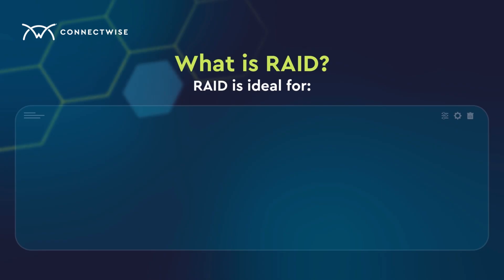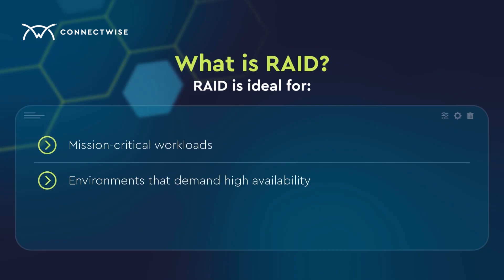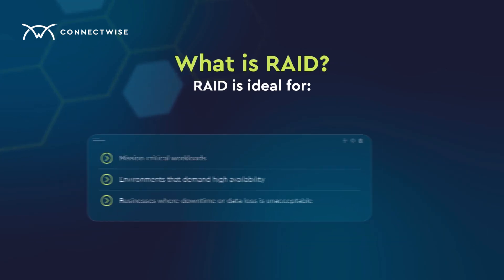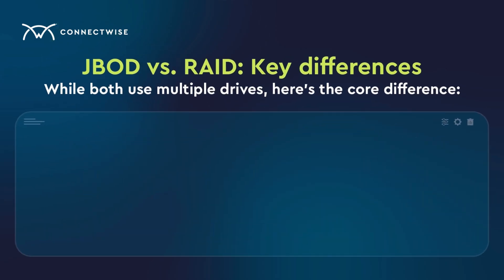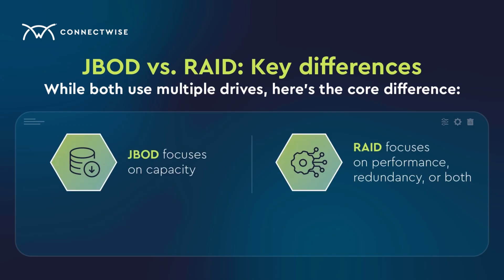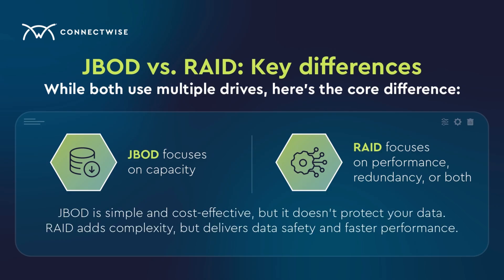RAID is ideal for mission-critical workloads, environments that demand high availability, and businesses where downtime or data loss is unacceptable. When comparing JBOD versus RAID, here's the core difference: JBOD focuses on capacity, while RAID focuses on performance, redundancy, or both. JBOD is simple and cost-effective, but it doesn't protect your data. RAID adds complexity but delivers data safety and faster performance.